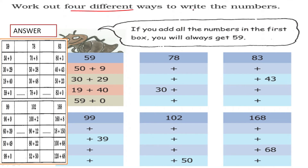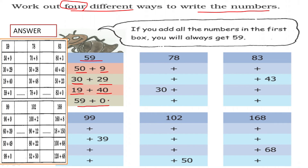Workout — write the number in 4 different ways. For example, 59: we can write 50 plus 9, or 30 plus 20 plus 9, or 19 plus 40, or 59 plus 0. That gives 4 different ways to express 59.